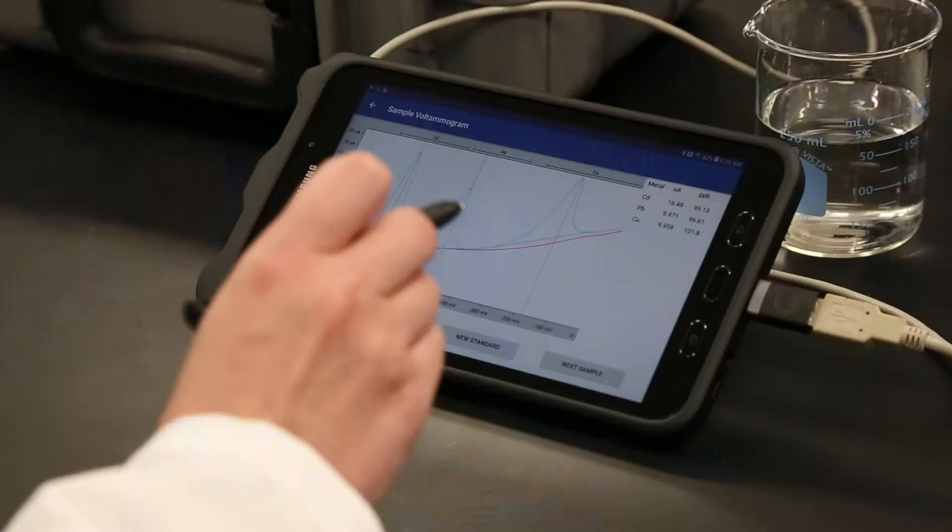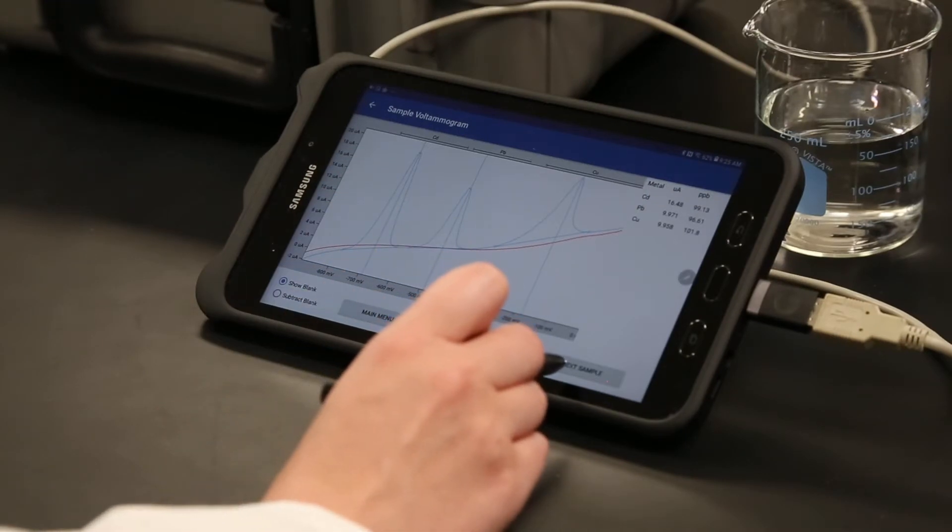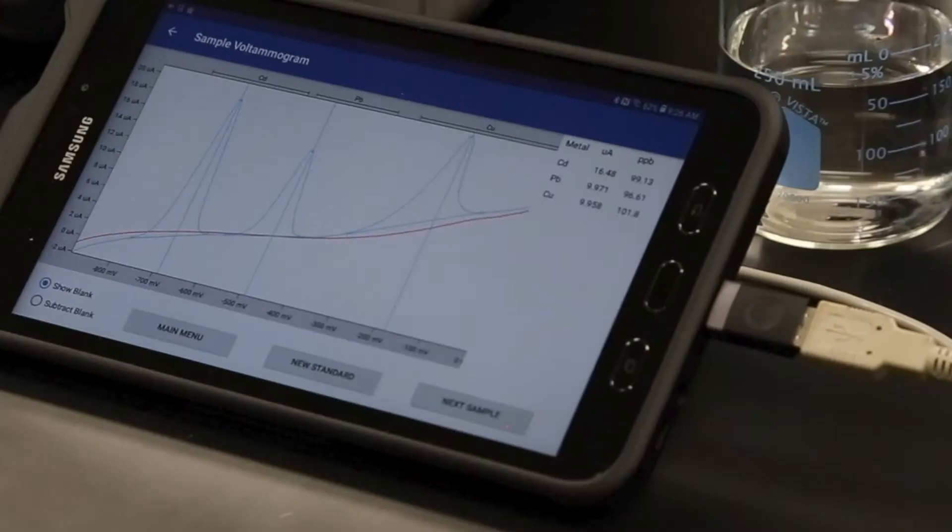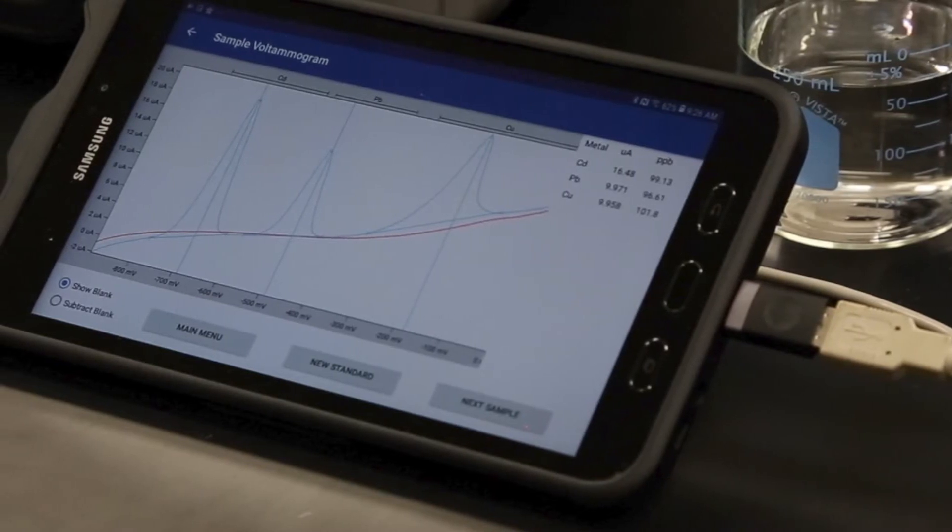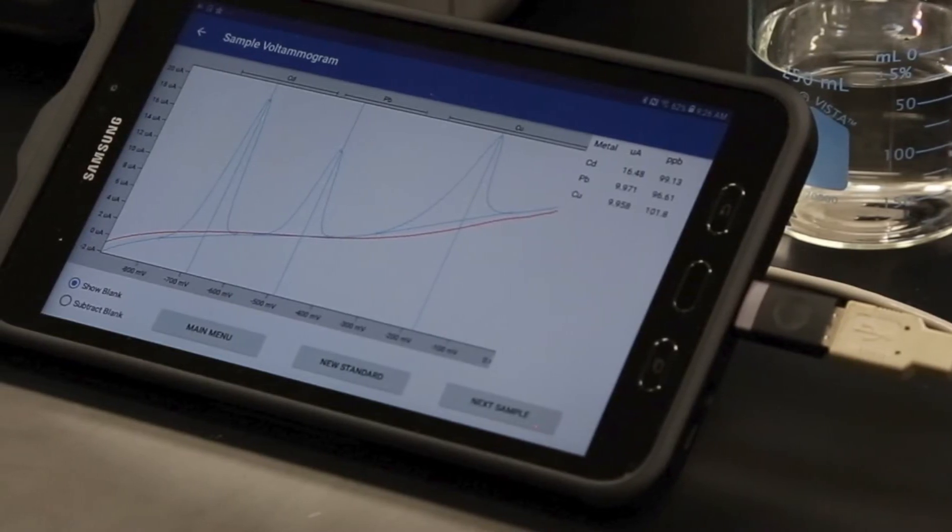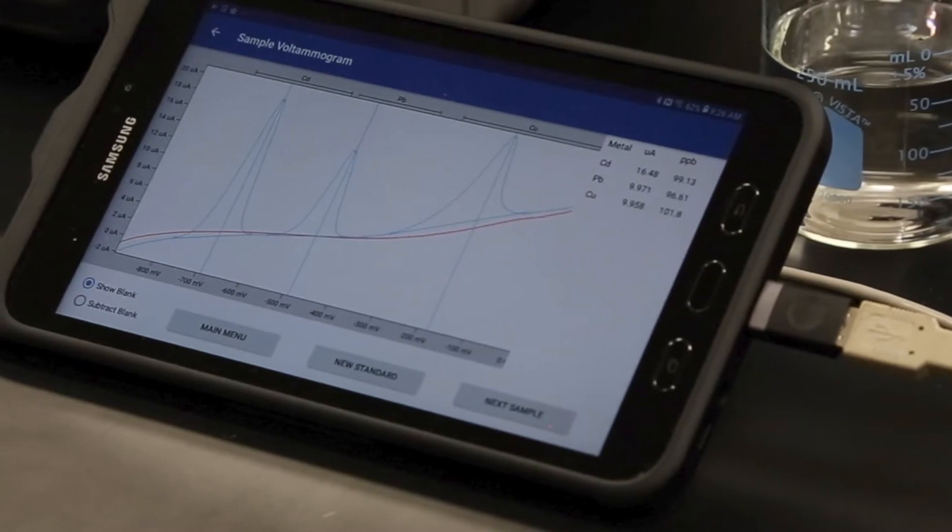There are now three options. Analyze another sample using the same calibration standard with the Next Sample button. This will return the user to the start of this section. Up to five samples are typically recommended for a single standard, although the software will allow more.